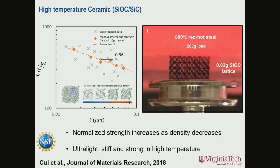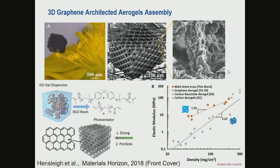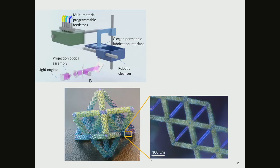The high-temperature silicon-oxy carbide material can sustain temperatures over 1,700 degrees C. We demonstrated this by using an 800-degree C red-hot steel piece sitting on top of these micro-lattice structures — which only weigh about 20 milligrams. These are the structural material results; this is the baseline technology.